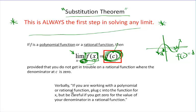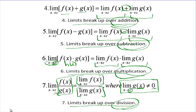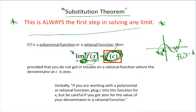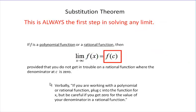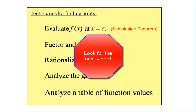Verbally, if you're working with a polynomial or a rational function, plug c in for x — but be careful if you get zero in the denominator of a rational function, since that causes trouble with the division part of the Main Limit Theorem. Polynomials are smooth, continuous functions, so that's never a problem. We're going to make substitution always the first step in any limit, regardless of whether we have a polynomial, rational, trig, or exponential function.